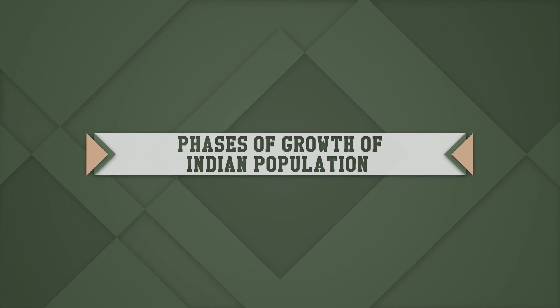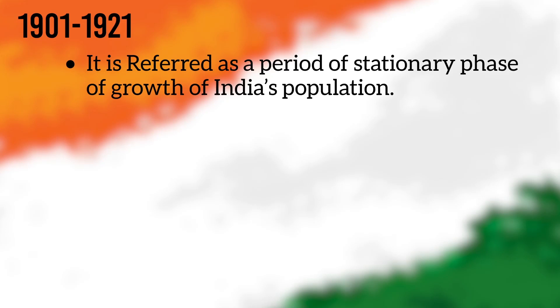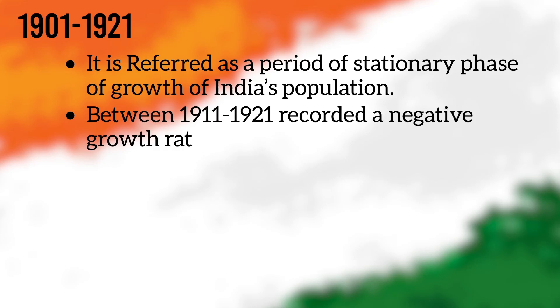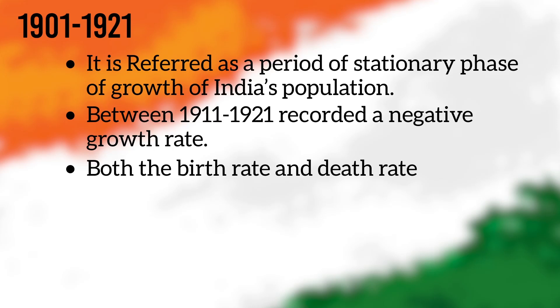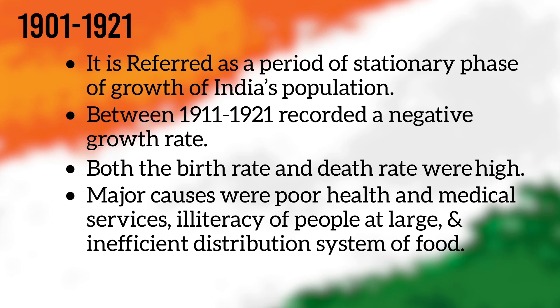Now we are going to look at the phases of growth of Indian population from the 19th century. The first phase, 1901 to 1921, is referred to as the period of stationary phase of growth. Between 1911 and 1921, India recorded a negative growth rate, mainly because both birth rate and death rate were high. Major causes were poor health and medical services, illiteracy of people at large, and inefficient distribution of food.